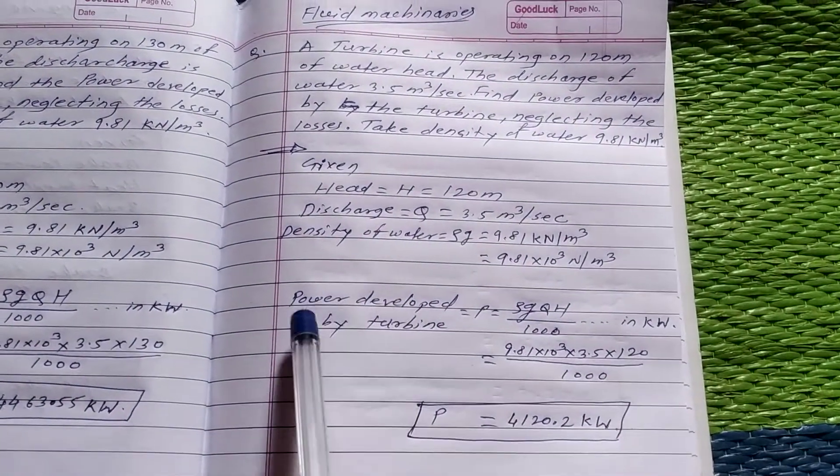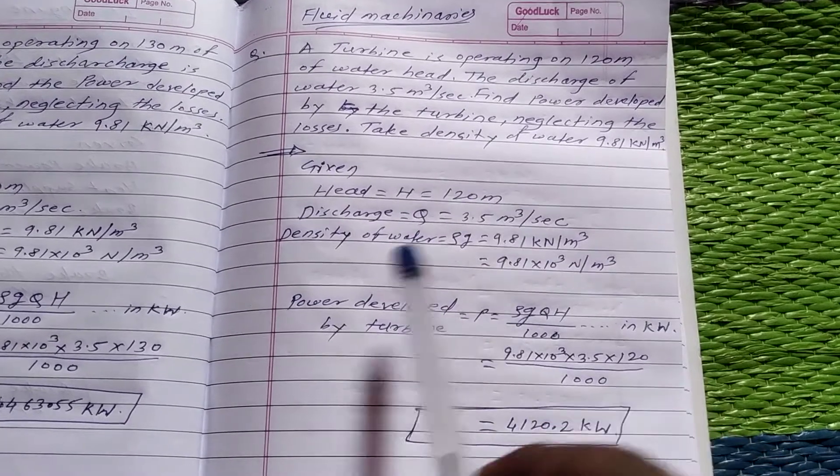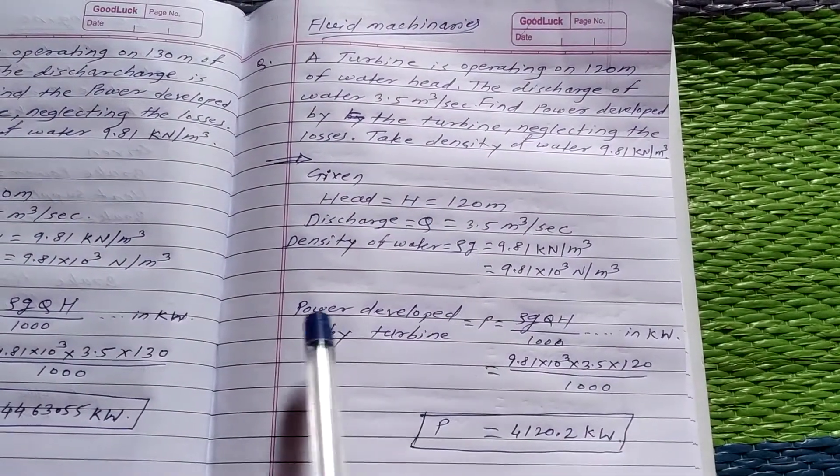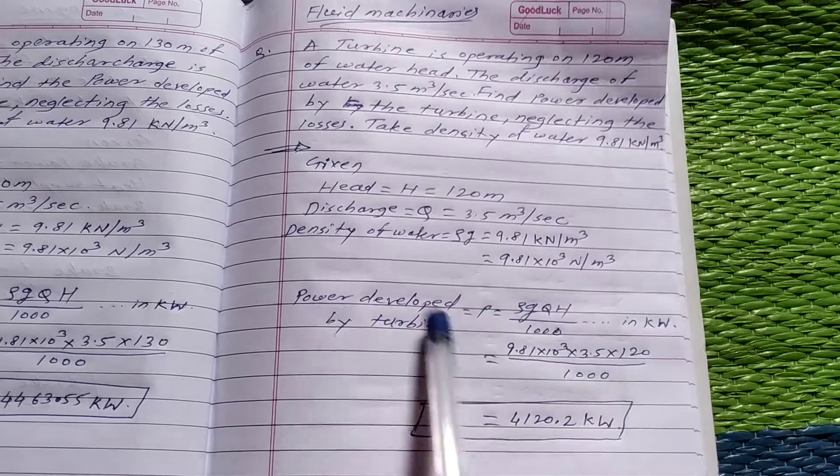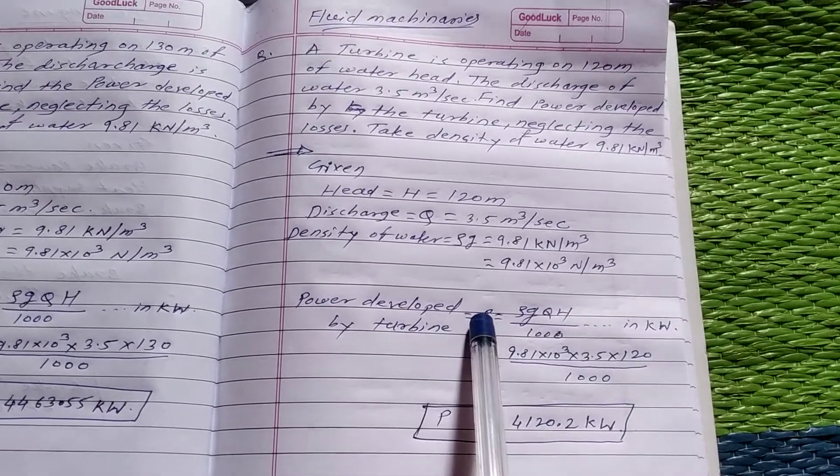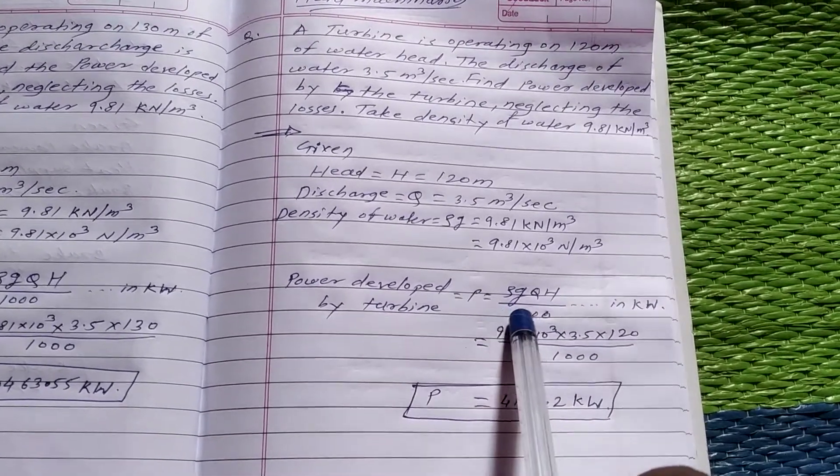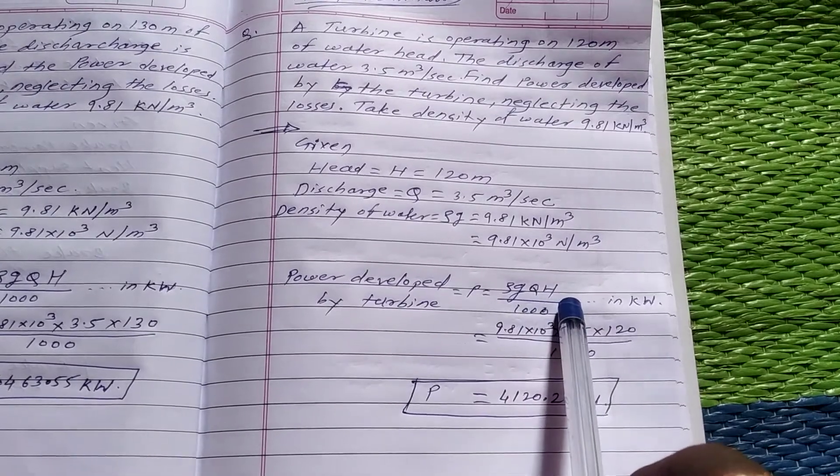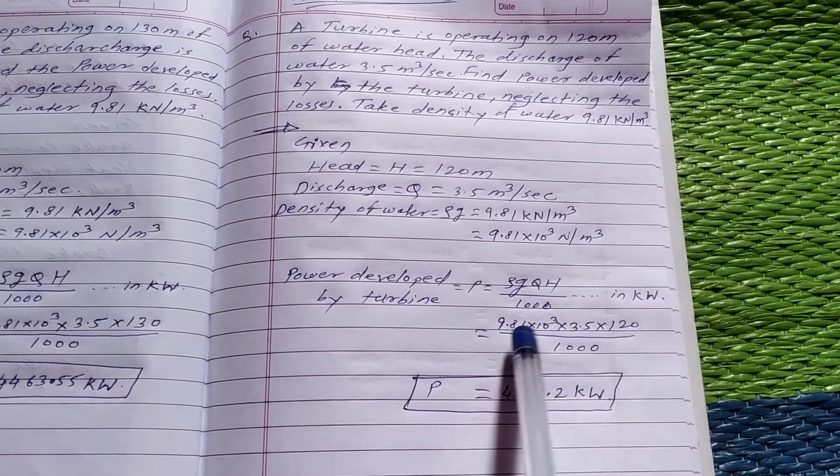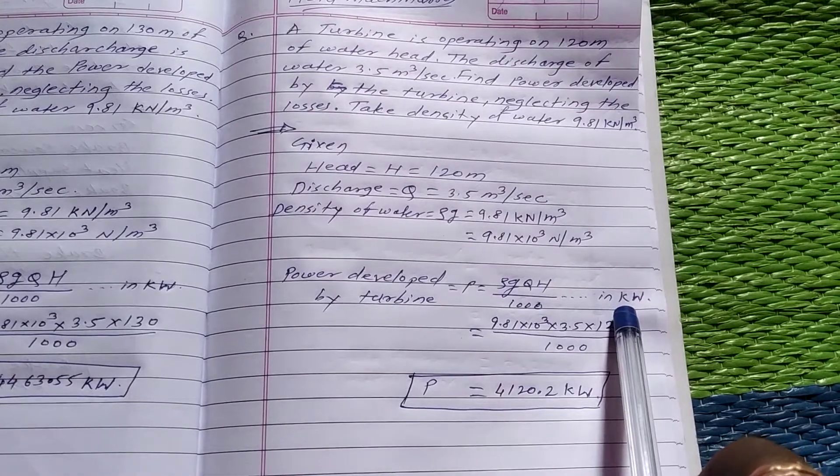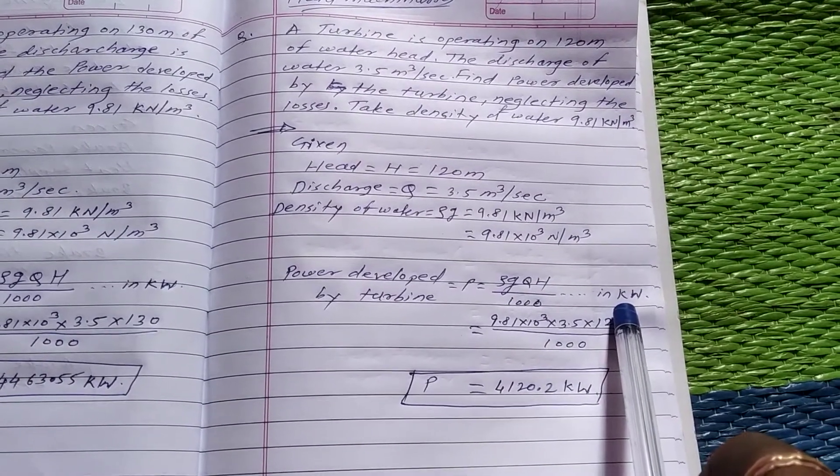The formula for power developed by the turbine is P = ρGQH divided by 1000. The answer comes in kilowatt.